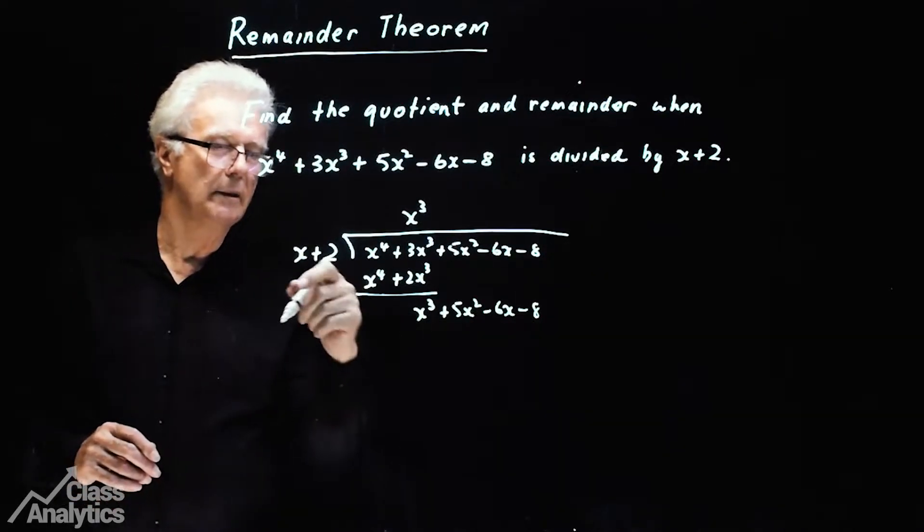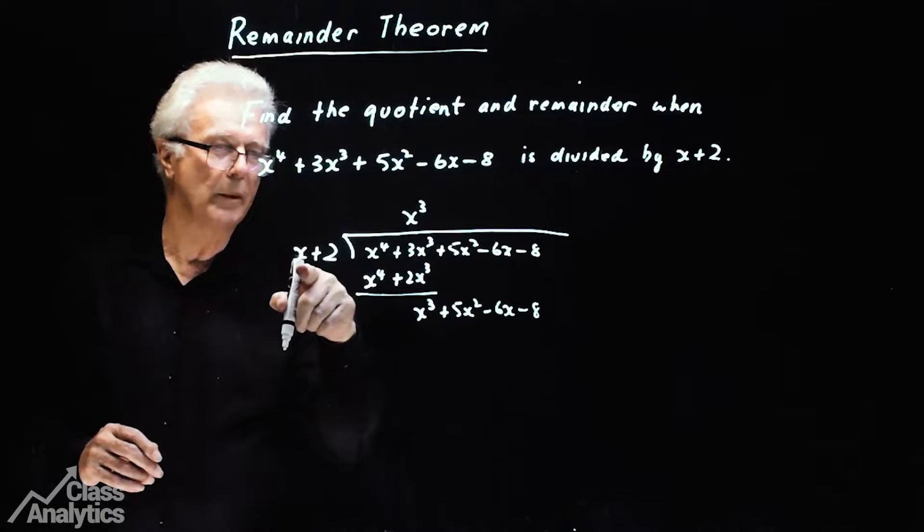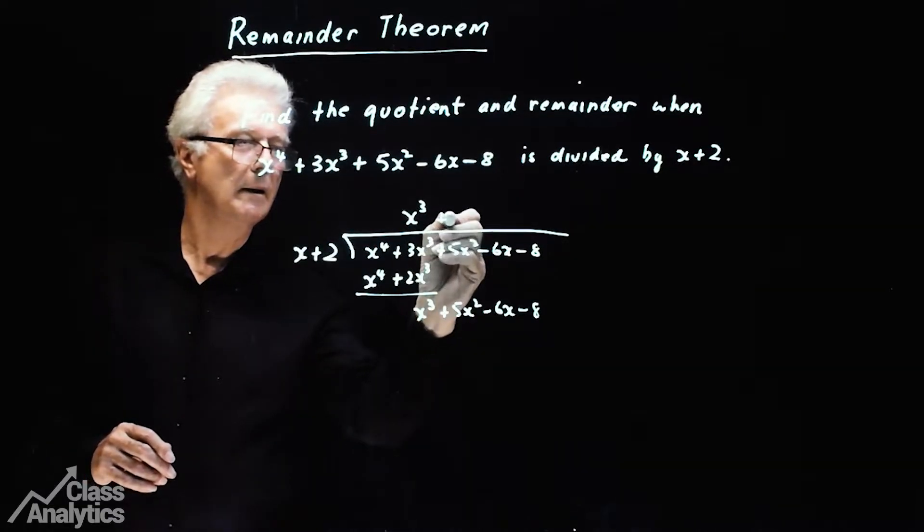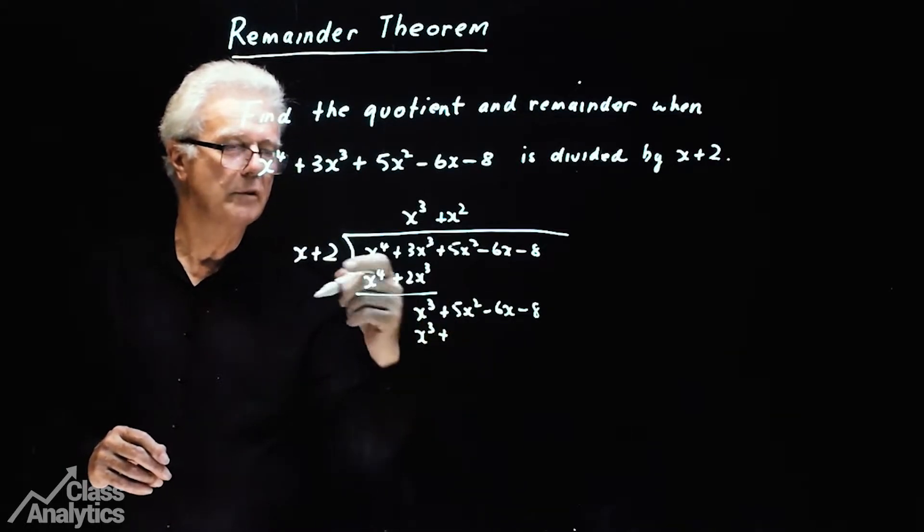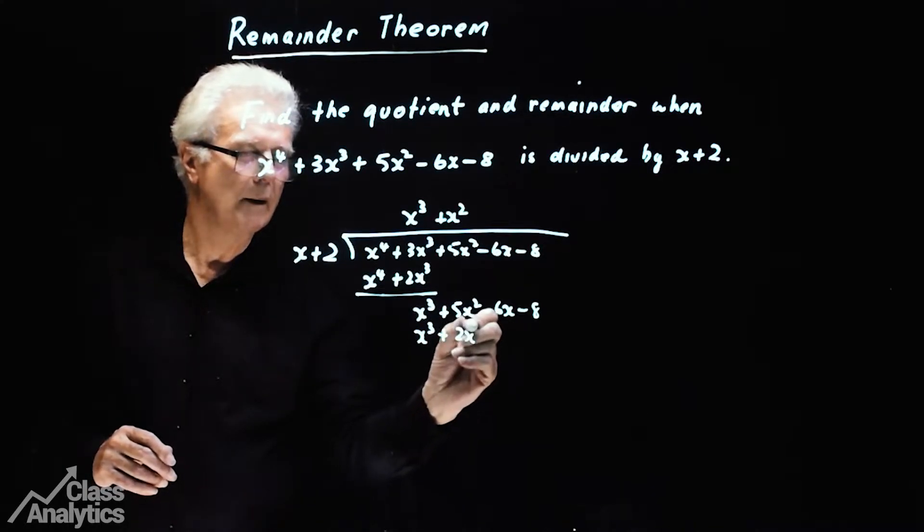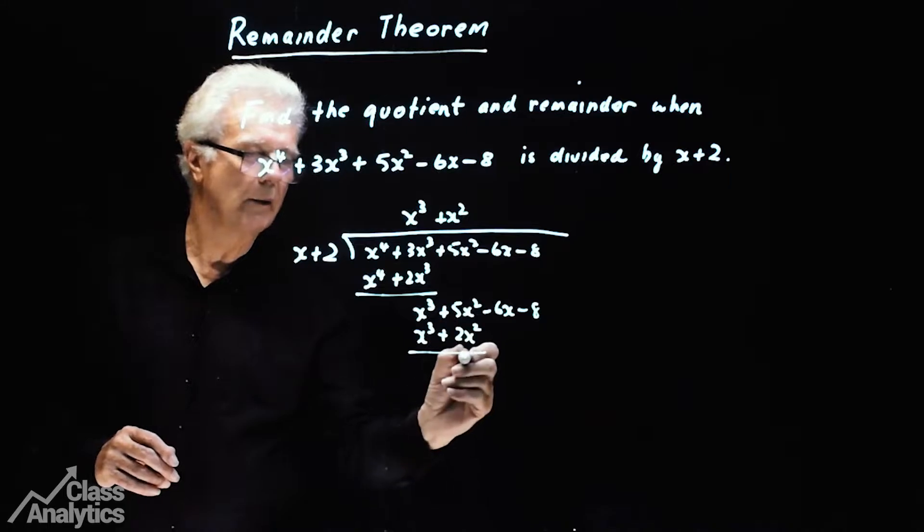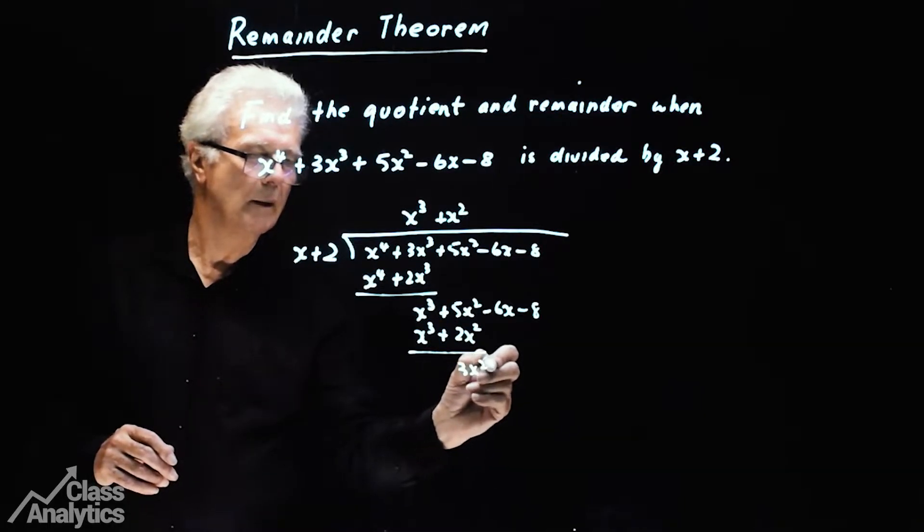I need an x cubed here, so I'll multiply this by x squared. x squared goes there, lining it up, plus and this becomes 2x squared. Subtract and we're going to get 3x squared, bring these down.